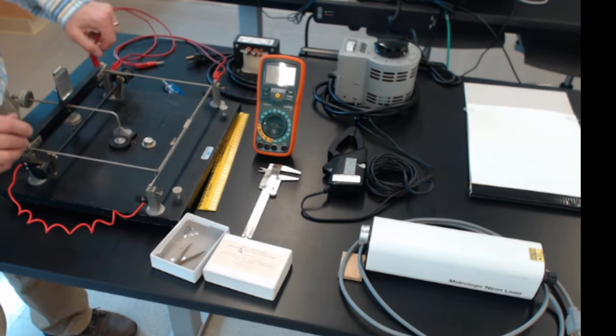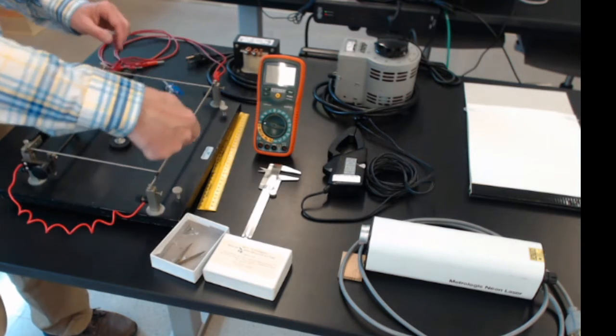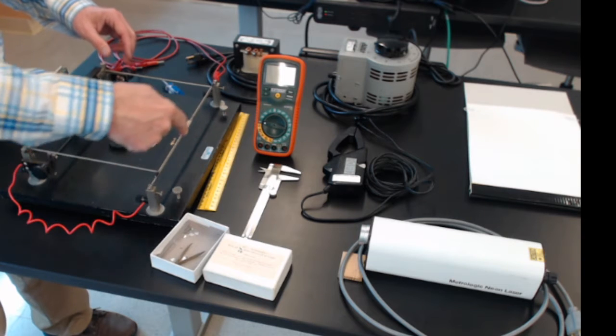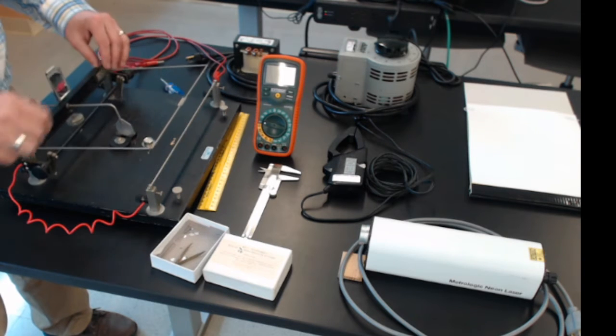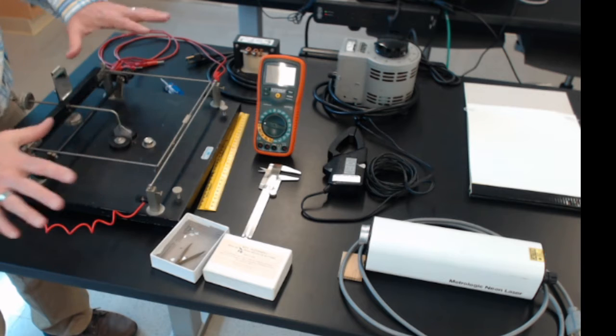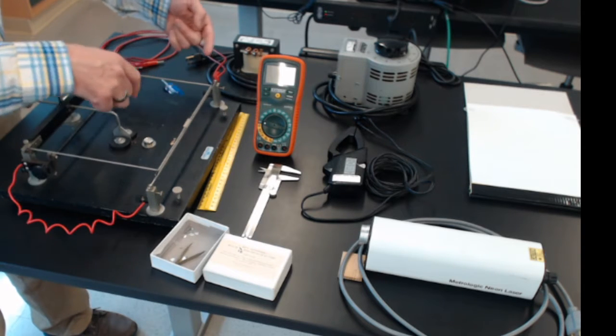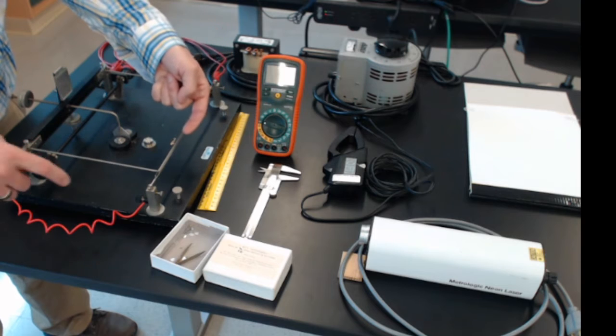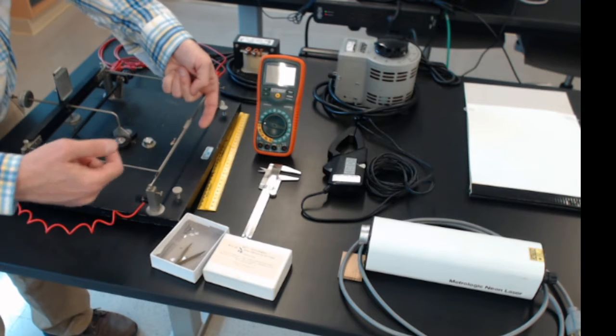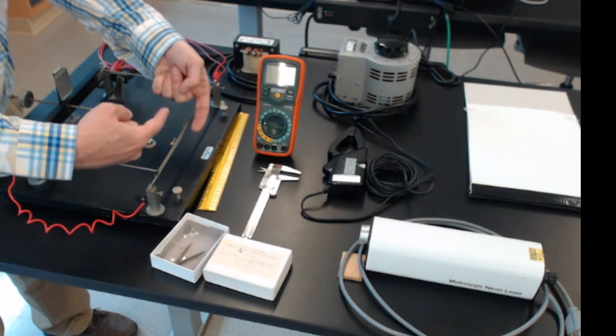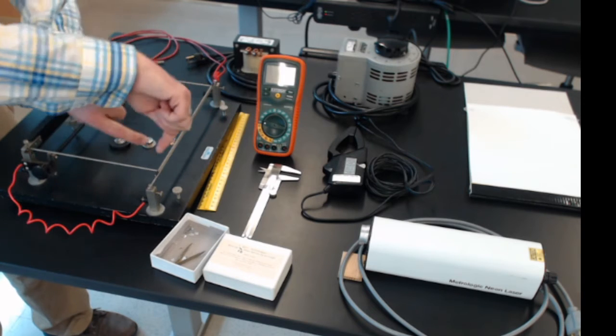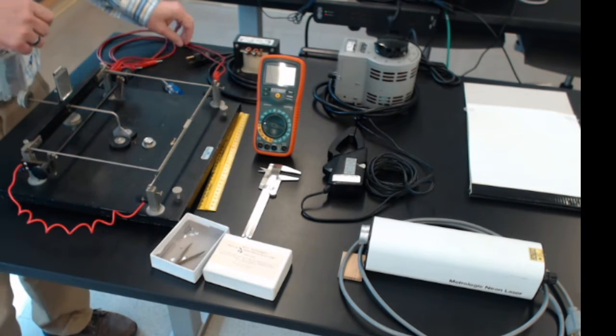So just to go over that again, current will come in, go through the bottom wire, go around, go up, go around through the top wire, and come back out. And back and forth, because we're using alternating current here, so there's not one direction. But when the current is going through here, the current in the bottom wire is going that way, the current in the top wire is going the other direction, and then it reverses. So they're always going backwards.